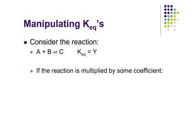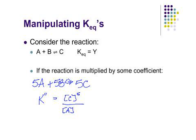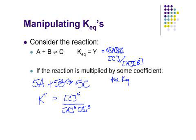So if I multiply this equation through by 5, so if I have 5A plus 5B in equilibrium with 5C, can we write a new KEQ expression? I'm going to call it K double prime. So that would be C raised to the 5th power over A raised to the 5th power times B raised to the 5th power. So if you multiply the reaction by some coefficient, the new KEQ is the original KEQ raised to that power.